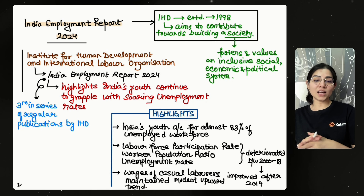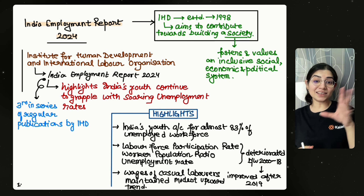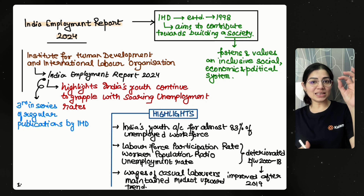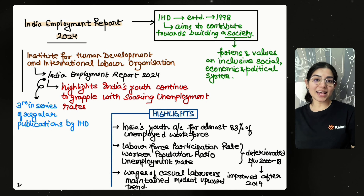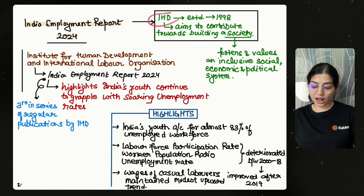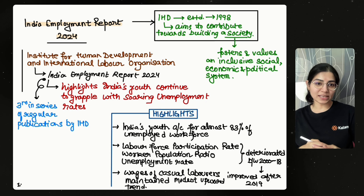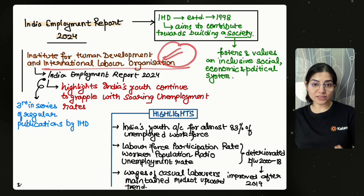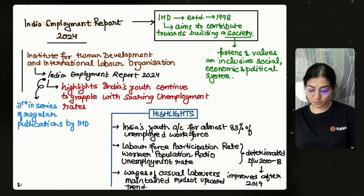It has been reported that our youth in India are almost 83% unemployed — that is a very serious finding published in this report. This report was published by the Institute for Human Development (IHD) and the International Labour Organization (ILO). ILO has had a lot of questions asked about it in PYQs.